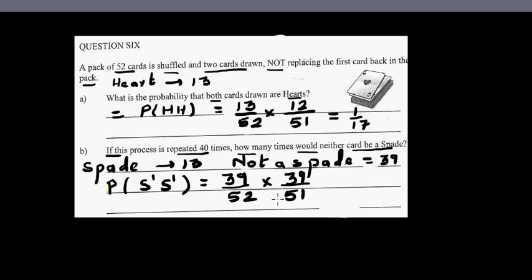You've got 52 cards, 51 cards sorry, you're taking one card off and for the second it's again 39 out of 51, and you're doing this for 40 times so multiply by 40. If you simplify this using a calculator, this will be around 23 times. So you can say if you do this experiment 40 times, 23 times you will get two cards which are not spades.